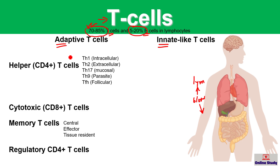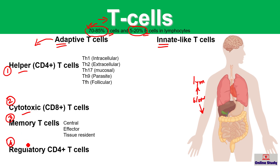Adaptive T cells have different kinds. First is the helper T cell, second is the cytotoxic T cell, third is the memory T cell which can be helper or cytotoxic, and fourth is the regulatory T cell. The most important adaptive T cells are the helper T cell and cytotoxic T cell for the prevention of infection and disease. The memory T cell also helps. Helper T cells are those that help other cells, which is why they are called helper T cells.